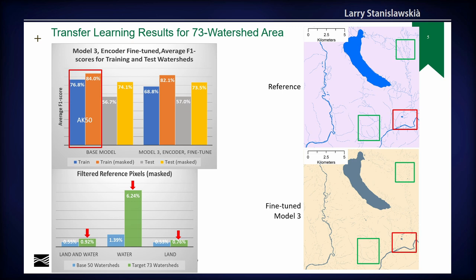In the target area we had to filter about twice the number of pixels and about six times the number of water pixels compared to the base area. We think that was hindering our transfer learning — the model was not predicting as well in that area. Although looking at the results in the lower panel, water bodies are being predicted fairly well while the network features are not.